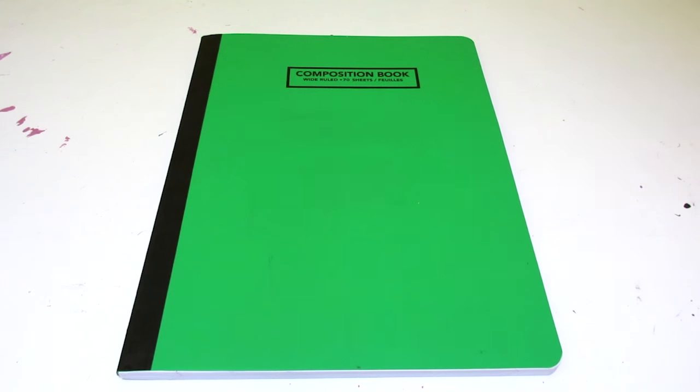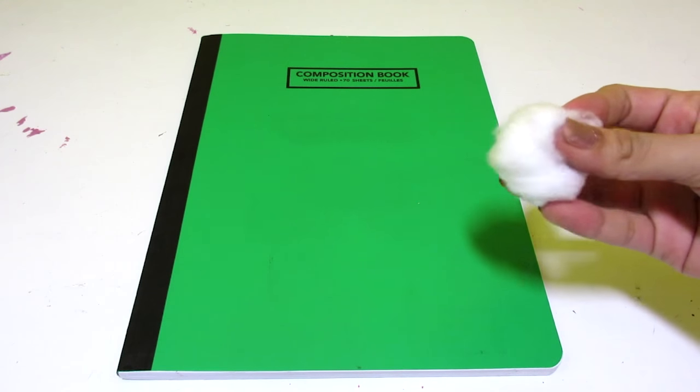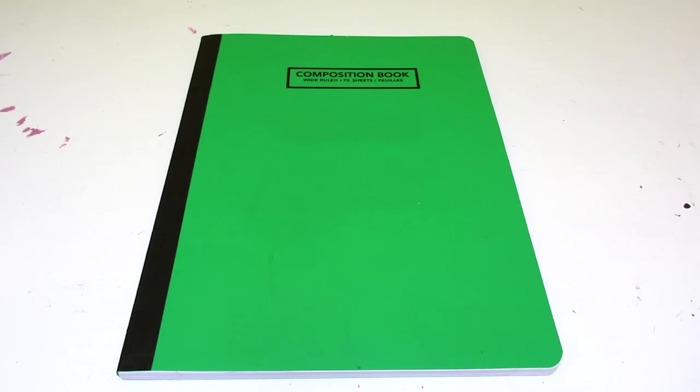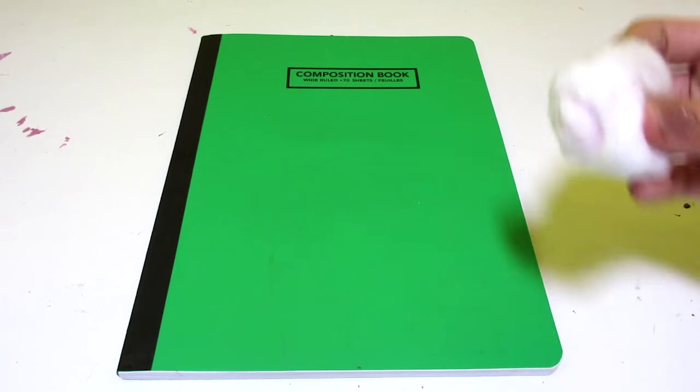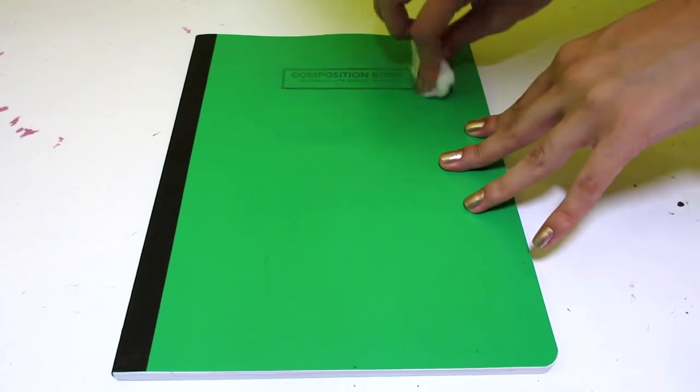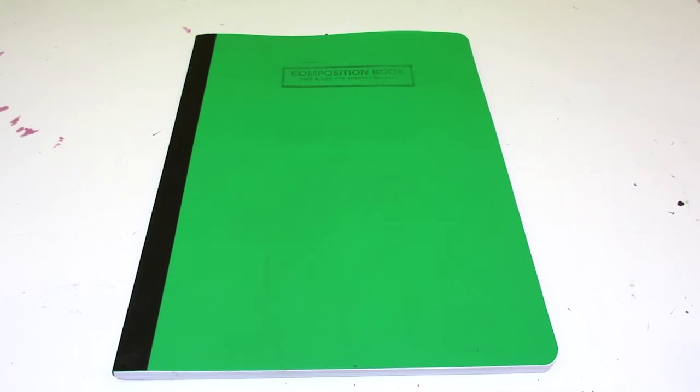To do so, grab some nail polish remover and a cotton ball. Put some nail polish remover on your cotton ball and begin rubbing off as much of the logo as possible. You might want to test this out on a small portion of the cover to make sure it's safe. Once you've done that, you can use a dish sponge to gently scrub off the rest.